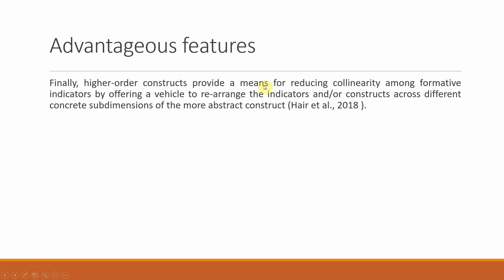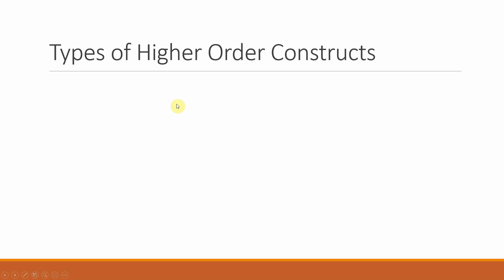Finally, higher order constructs provide a means of reducing collinearity among formative indicators by offering a vehicle to rearrange the indicators and constructs across different concrete sub-dimensions of more abstract constructs. You can reduce collinearity among formative constructs by arranging them into a higher order construct. The difference between formative and reflective constructs is explained in another video on the channel.